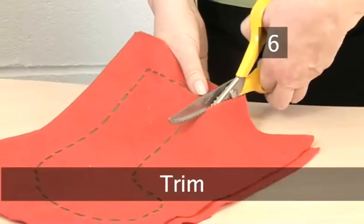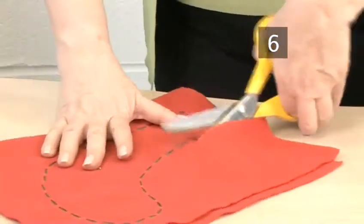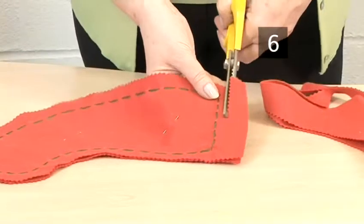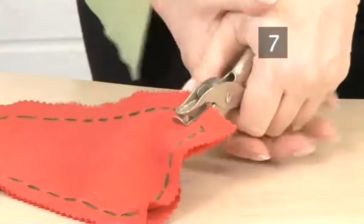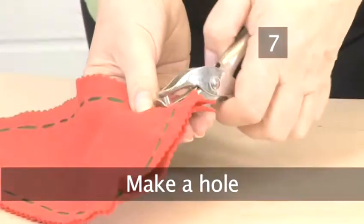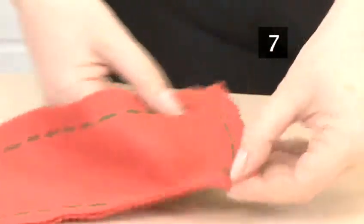Step 6. Trim. Trim the material with pinking shears about 1cm away from the stitching. Step 7. Make a hole. Punch a hole in the corner at the top of the stocking.